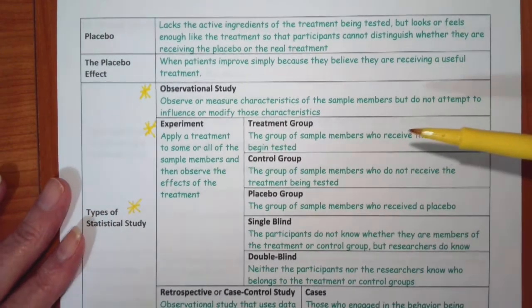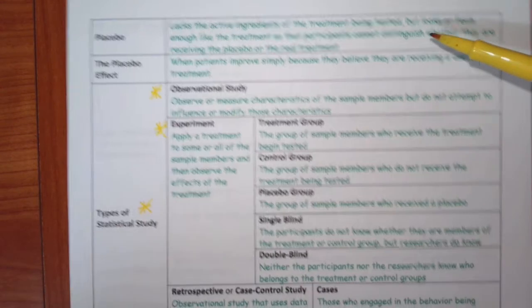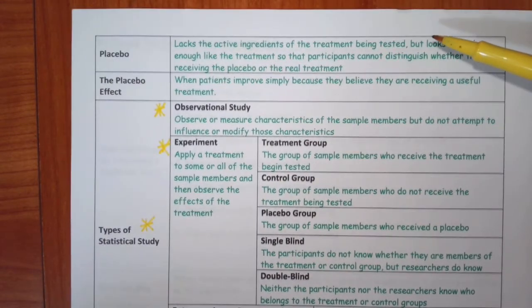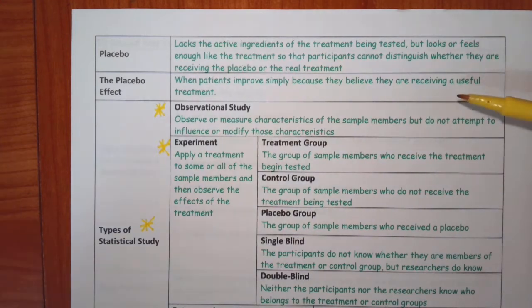Then we're going to talk about the types of statistical studies. But before we do, we need to know what a placebo is. And a placebo is, you know, in medication, it's usually a sugar pill. It's something that looks exactly like the medication being tested, but has no impact. It has no effect. The placebo effect is when someone is given the placebo, they believe they're receiving the treatment, and they give the result of somebody who would be treated.